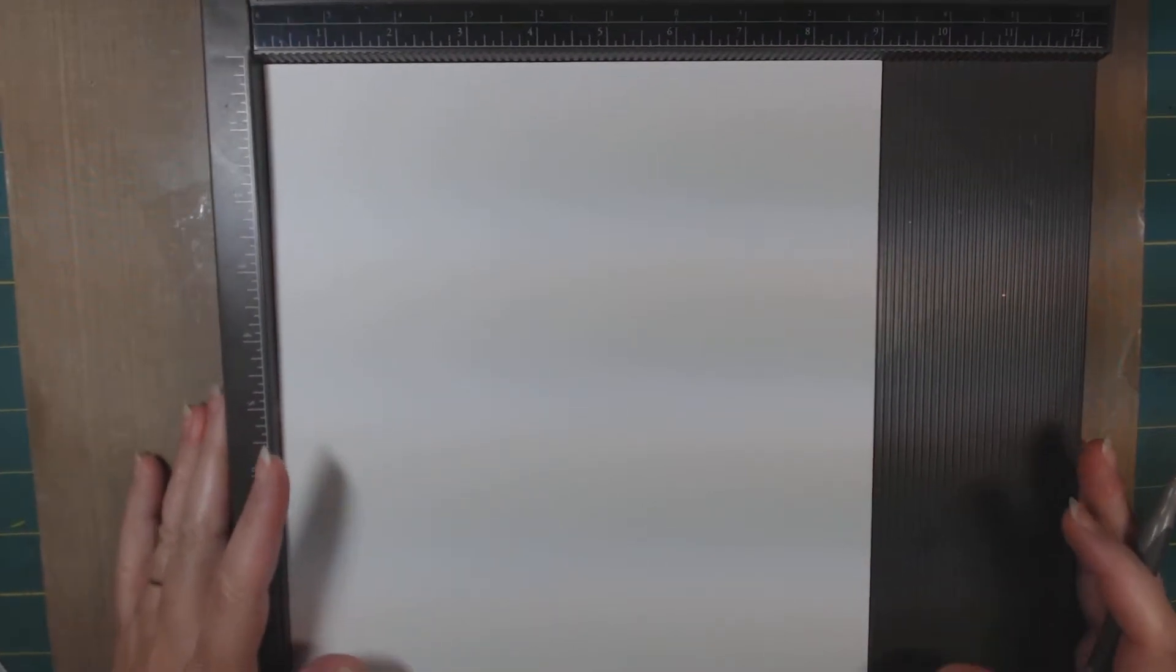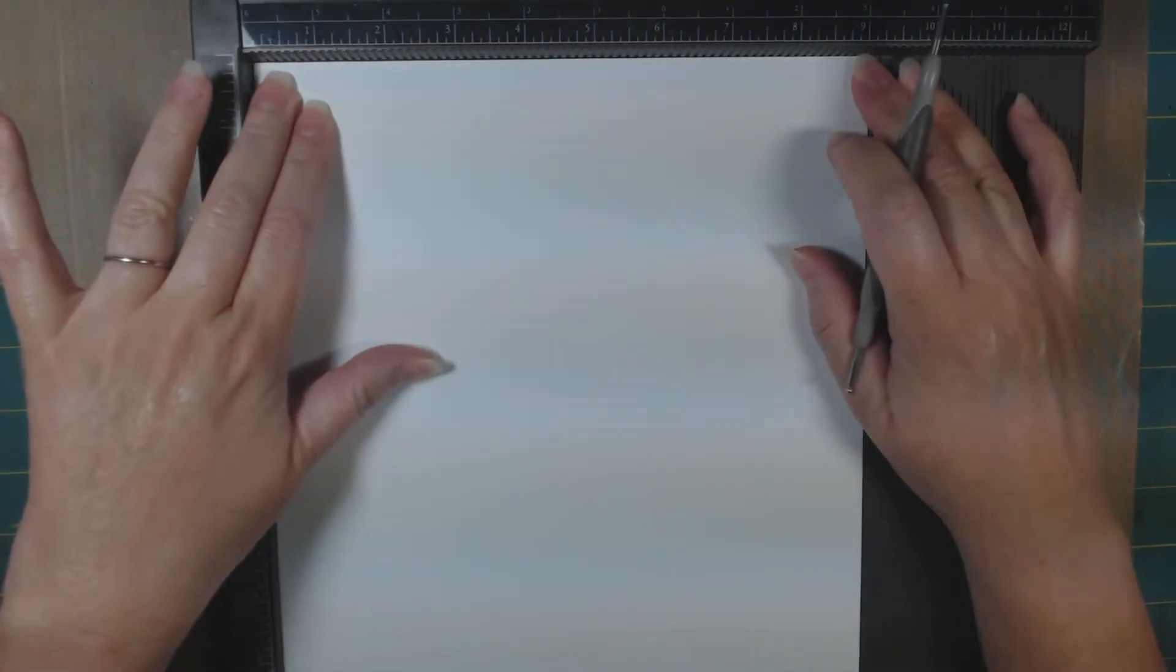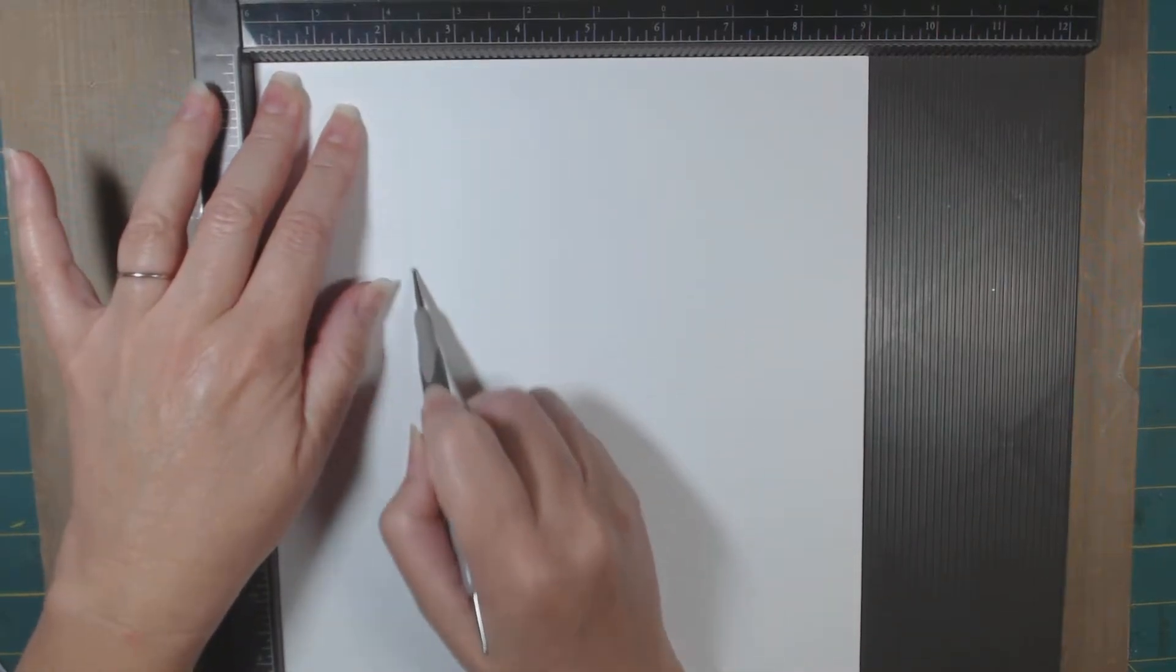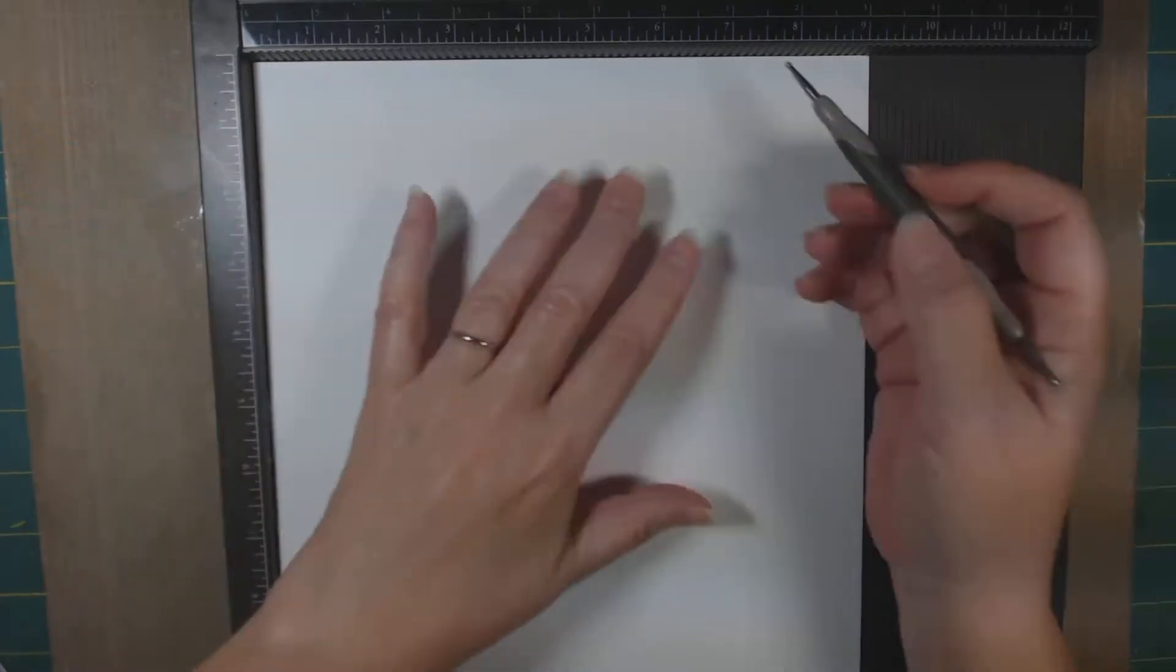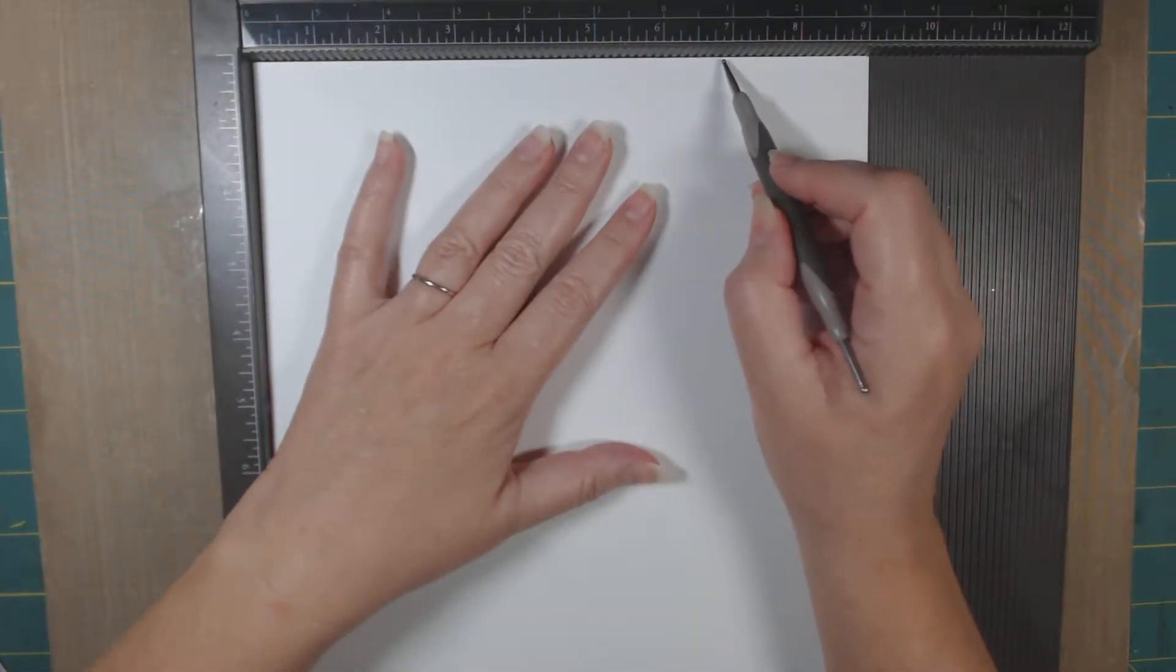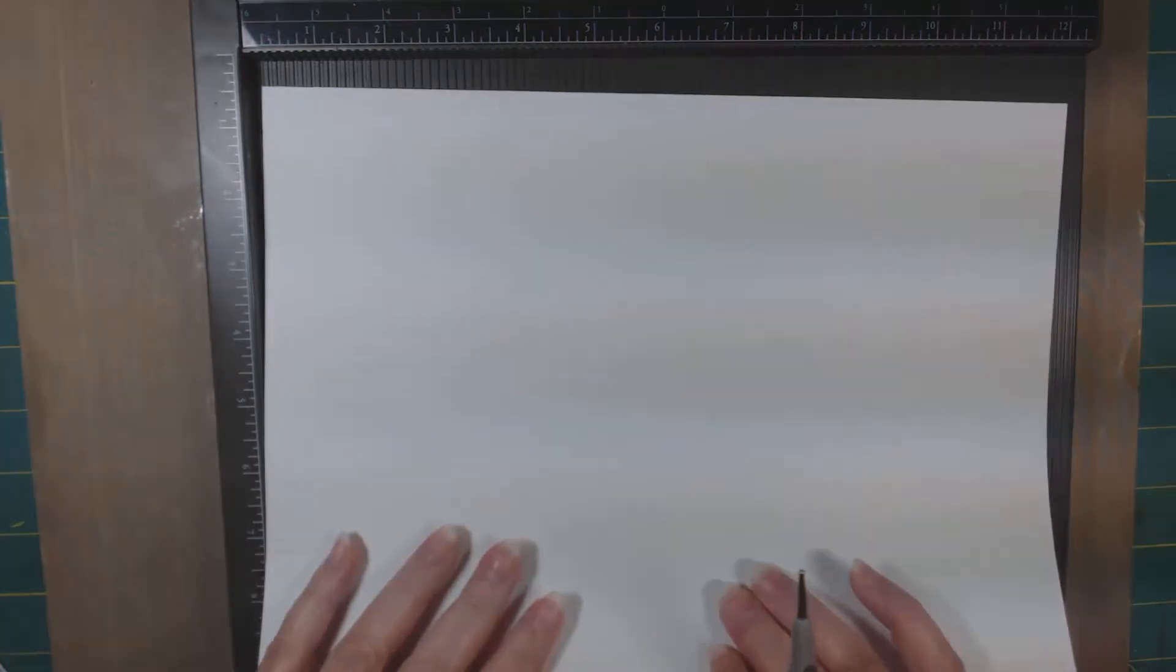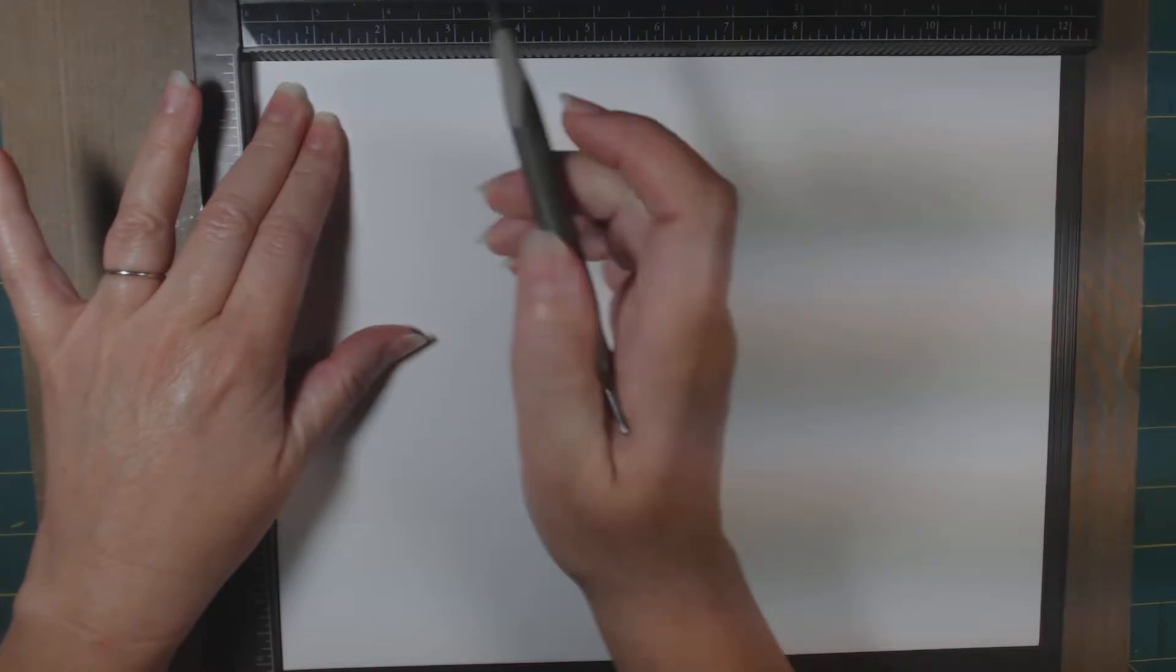Then you're going to need your scoring tool. On your nine and one-eighth inch side, we're going to put it on the score tool this way and we're going to score at two and a quarter all the way down, and then we're going to score at six and seven-eighths all the way down. Then we're going to turn it over on the twelve-inch side and we're going to score again at two and a quarter, five and a quarter, seven and a half, and then ten and a half.